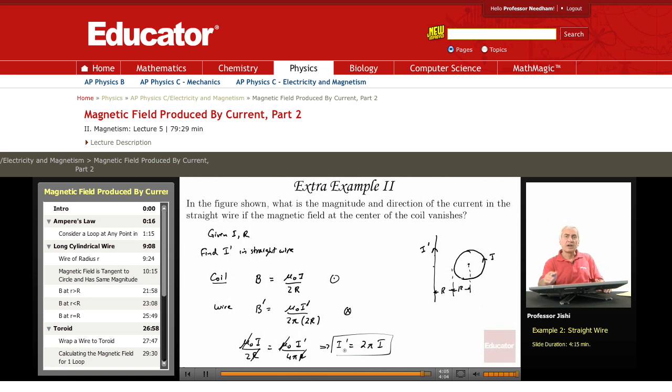So whatever the current I, you multiply by 2 pi, and that must be the current in the straight wire.